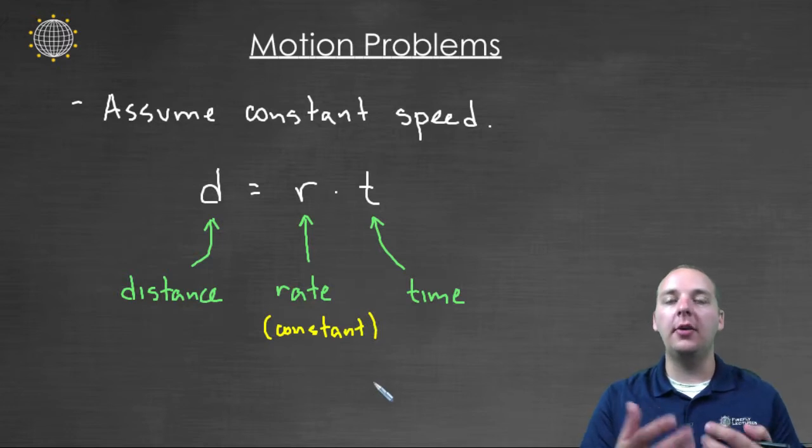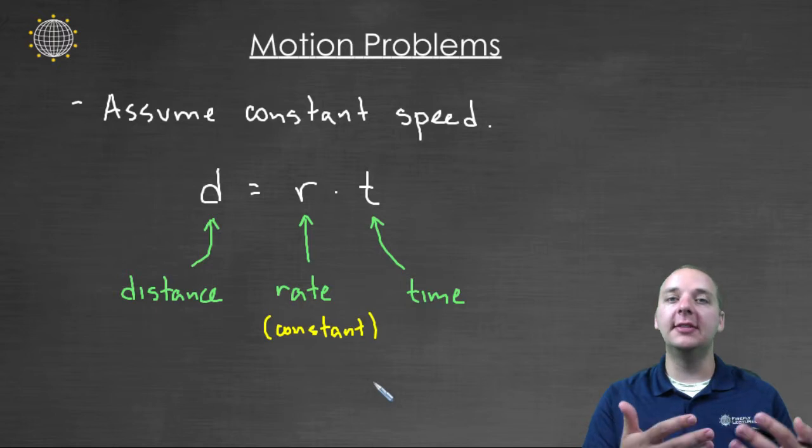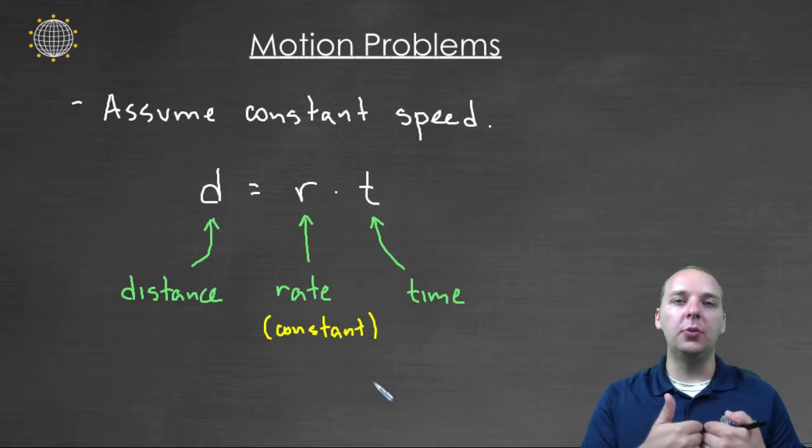When you get to calculus you actually study things that move like this, but the speeds might vary. It might speed up or slow down. We won't have anything like that. It'll travel that speed for a certain amount of time and it will go a certain distance and something will happen. Either something will catch up to something, or an object will go a certain speed going to a place and have a different speed coming back. A whole variety of types of problems.